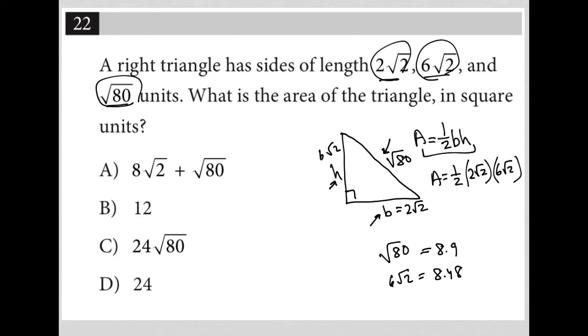And let's see, 2√2 times 6√2 is 12√4, but √4 is 2, which makes this just 24. And then because we're multiplying that by a half, I get 12 as my answer, and therefore choice B is the correct answer.